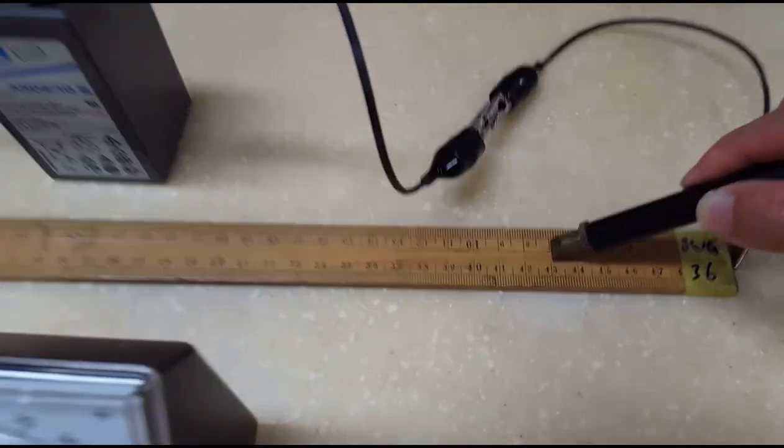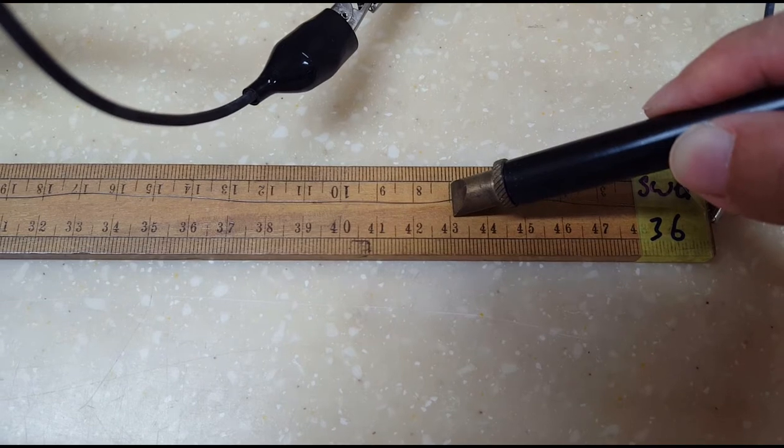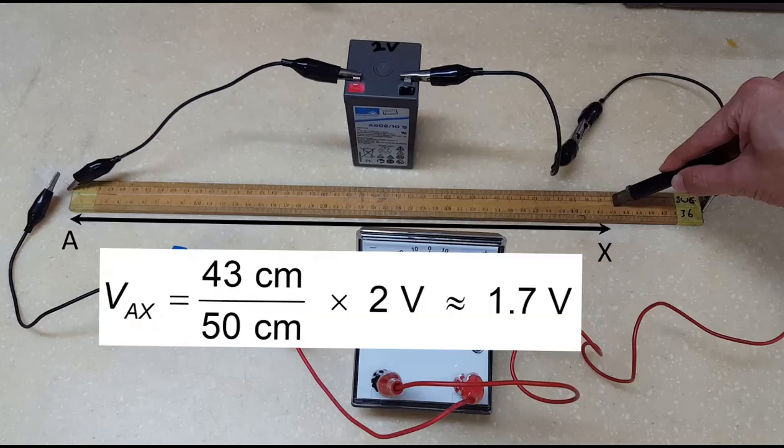For this particular setup, the balance point turns out to be at a 43cm mark of this 50cm long slide ruler. Using the potential divider principle, this works out to be about 1.7V, which is about right for a new 1.5V battery.